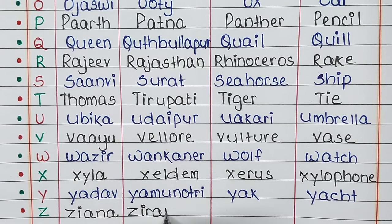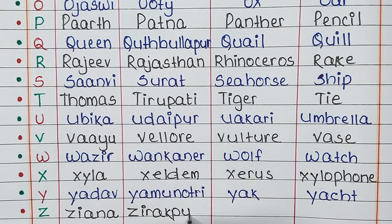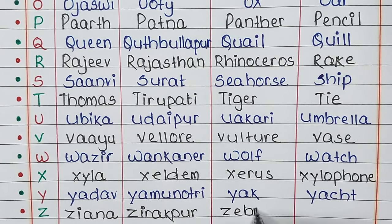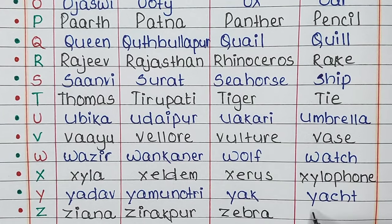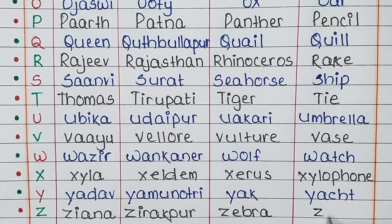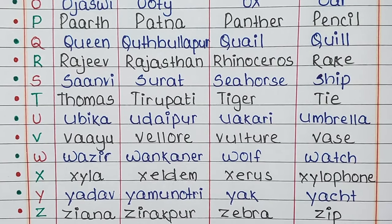Next is letter Z. The name is Ziyana, the place is Zirakpur, the animal is Zebra, and the thing is Zip.